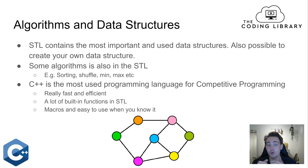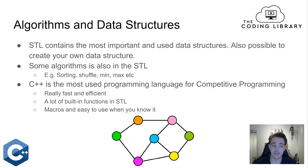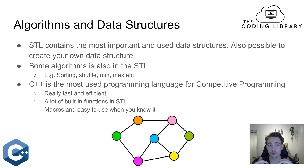The STL contains the most important and commonly used data structures: stacks, queues, vectors, maps, and many others. It's also possible to create your own data structure. Some algorithms are also in the standard template library — for example sorting in ascending or descending order, defining your own sort using lambda functions, shuffling a vector, or finding the minimum or maximum element in a container.